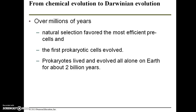Over millions of years, natural selection favored the most efficient pre-cells, just as it does with actual cells. Through this process, the first prokaryotic cells evolved, and prokaryotes lived and evolved all alone on Earth for about 2 billion years.